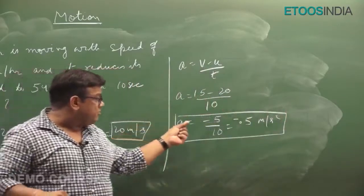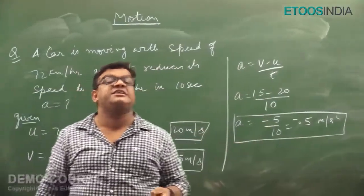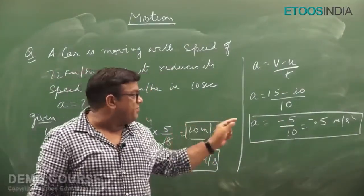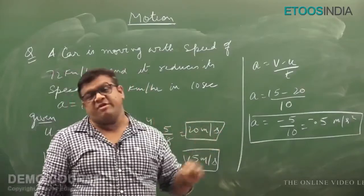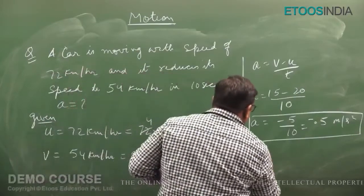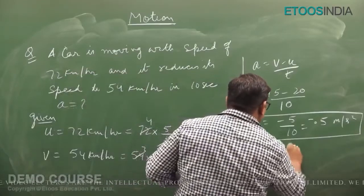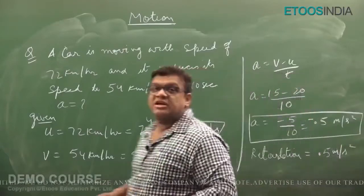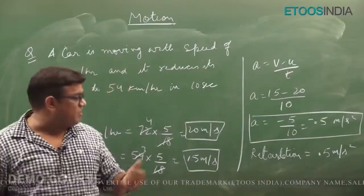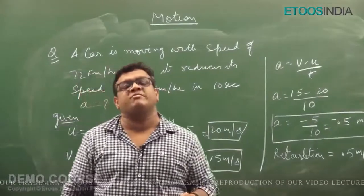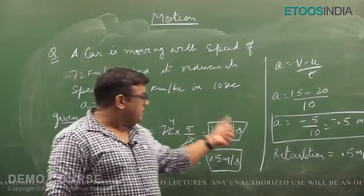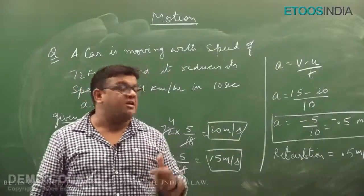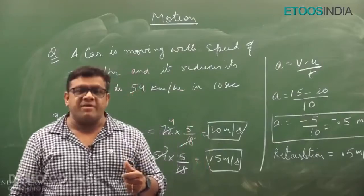So acceleration = −5 / 10 = −0.5 meter per second square. The answer is negative, meaning it is deceleration. If writing retardation, we write it as 0.5 meter per second square (positive). Students, we will stop here. In the next class, I will cover graphical representation. Please learn all these concepts well because in upcoming classes we will do numericals which are a bit tough. Happy learning, God bless you.